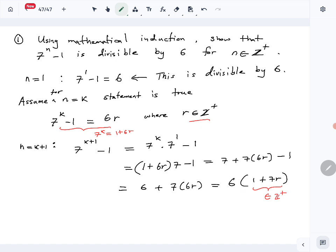This is 6 times an integer. So 7^(k+1) - 1 is in the form 6t, where t belongs to Z+. What is the conclusion then? This is divisible by 6.